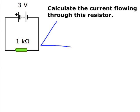In this problem, we're asked to calculate the current flowing through a resistor. We're going to use Ohm's law to do this, and here's a triangle representing the relationship for Ohm's law.